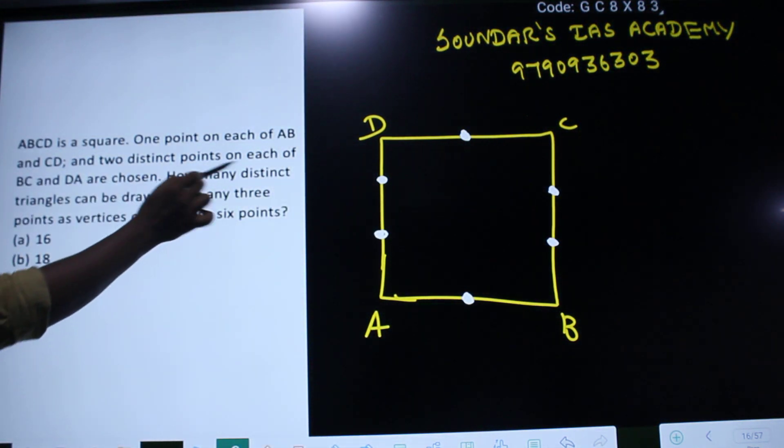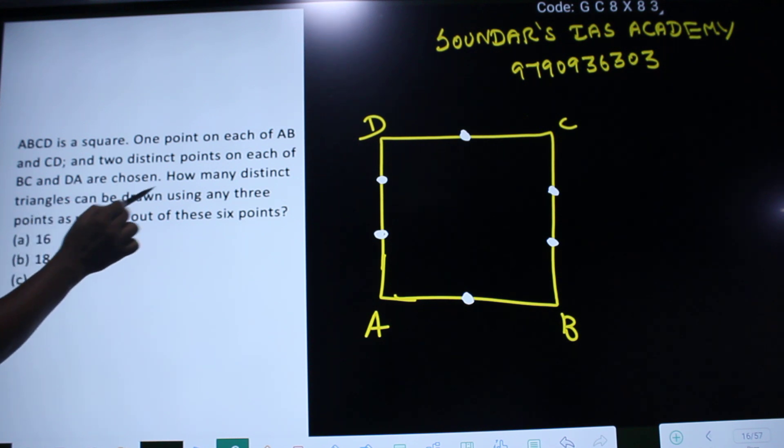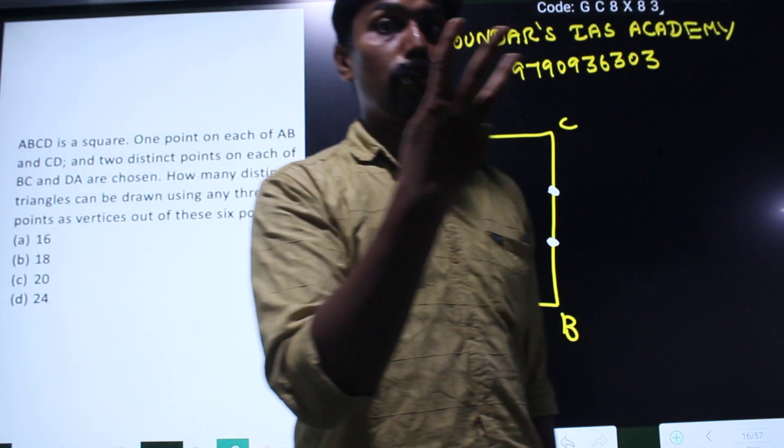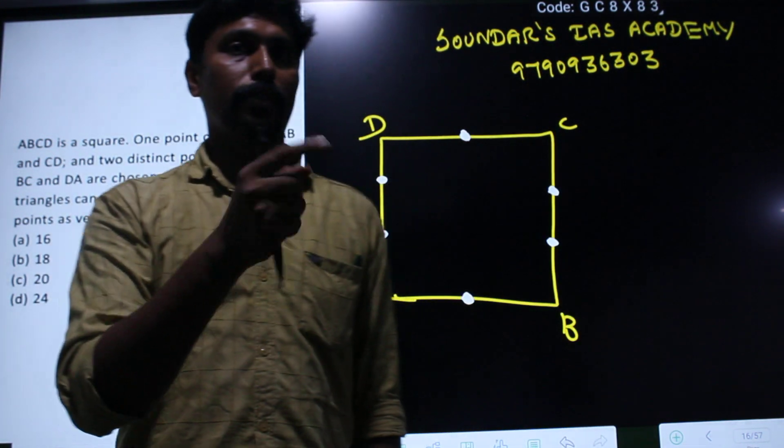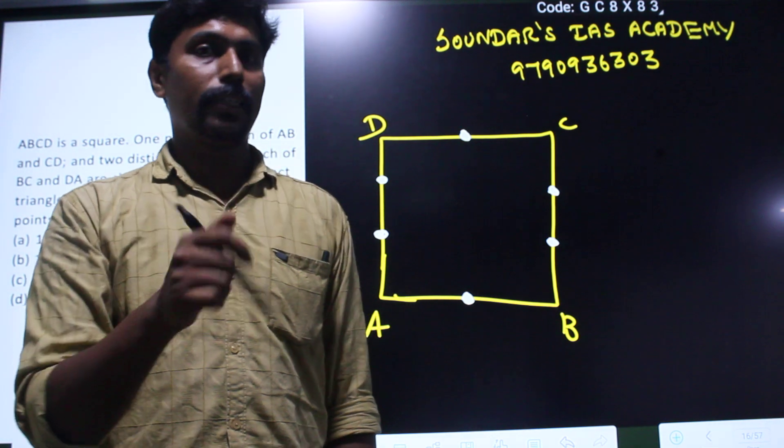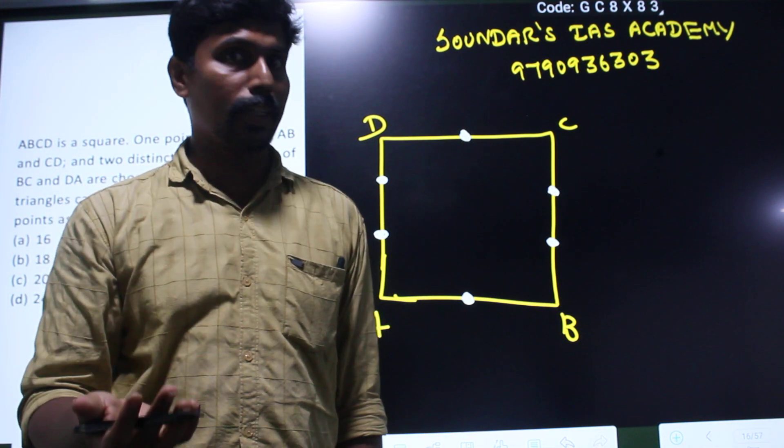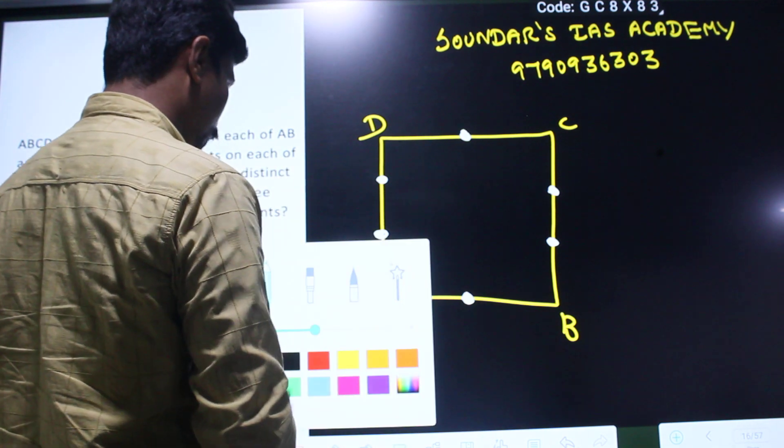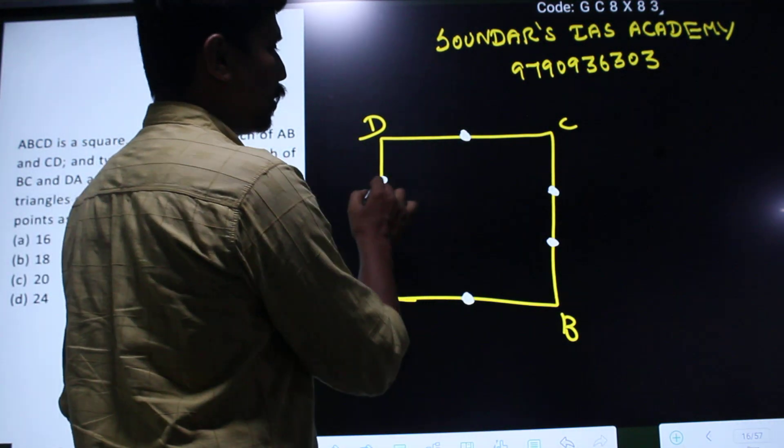How many distinct triangles can be drawn using any three points as vertices out of these six points? In the six points, if you look at the three points,